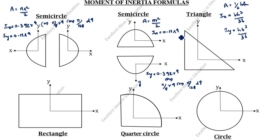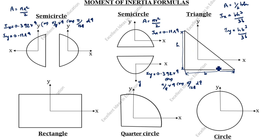This is b. This is h. I will write it here — this is b, this is h. What is the x value and y value? This is y. Y is equal to h by 3. This is x. x is equal to b by 3. This is the formula.